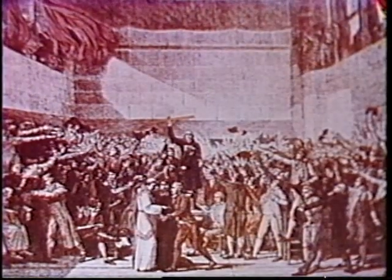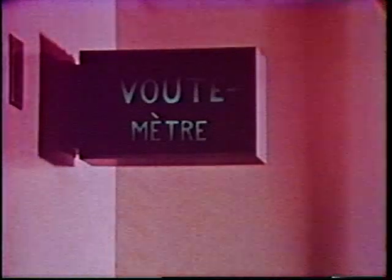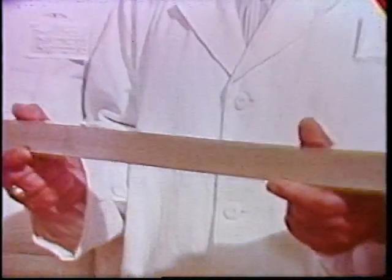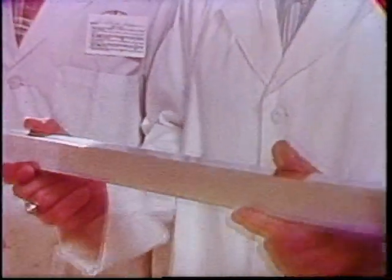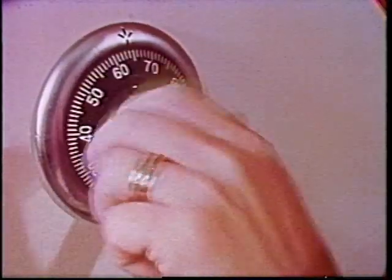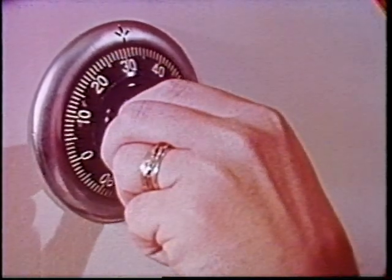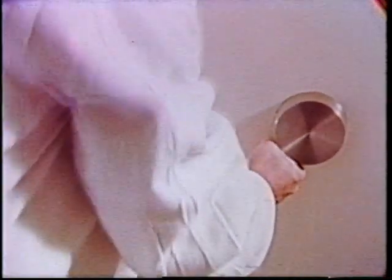Seven years later, the meter was unveiled to the world. The world's future standard of measurement was now based on one piece of metal stored in a vault in France. It could neither be scratched nor stolen nor lost, for there was no replacement. Scientists couldn't even return to Lavoisier's original measurement, because the surveyors' calculations were slightly in error.